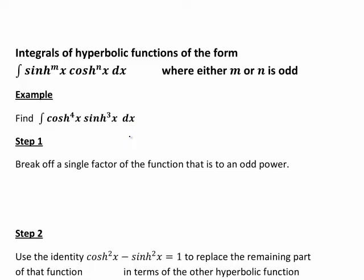The methods are reasonably similar to if you're looking at trigonometric functions involving an odd power of sine or cosine when you've got a product of those functions. But it is just slightly different because your hyperbolic function identities are different to your trigonometric identities. So let's have a look to see how this works.